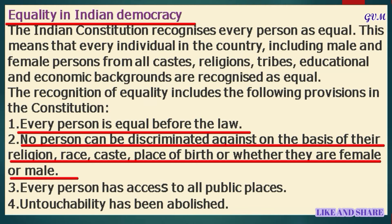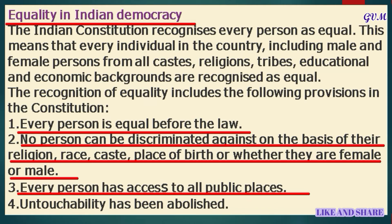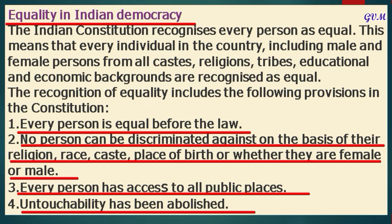There shall be equality, and no one can be discriminated against on the basis of religion, caste, sex, creed, or place of birth. The third provision is that every person has access to all public places — every person, regardless of caste, religion, or background, can use public places made by the government like parks and temples. The fourth provision is that untouchability has been abolished. Our constitution has made different provisions for the abolition of untouchability.